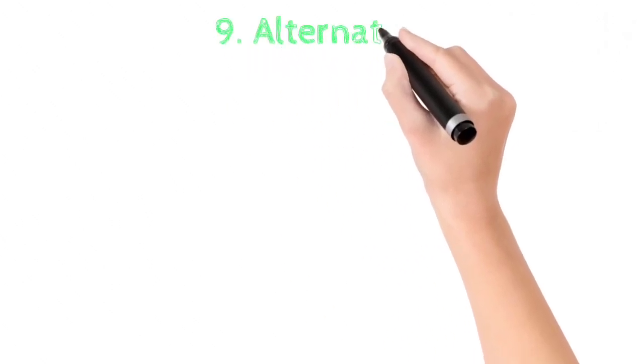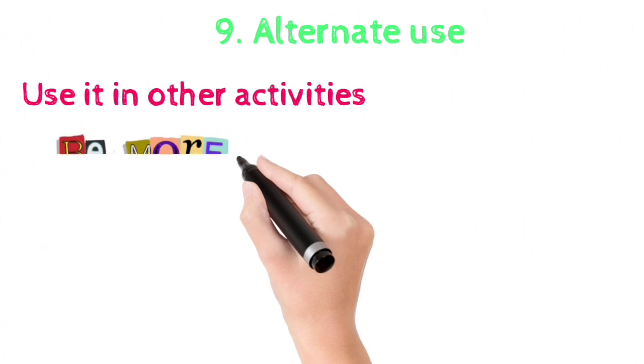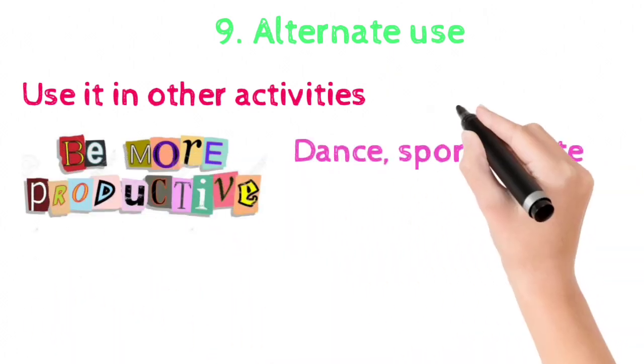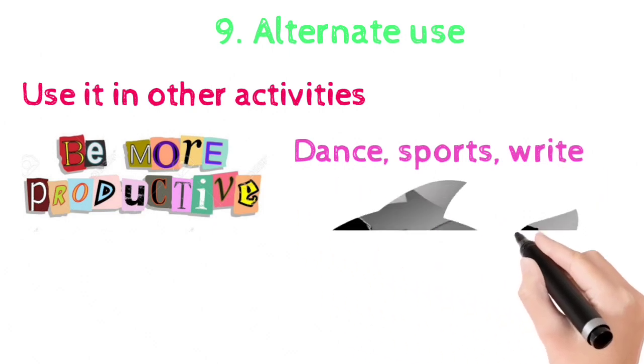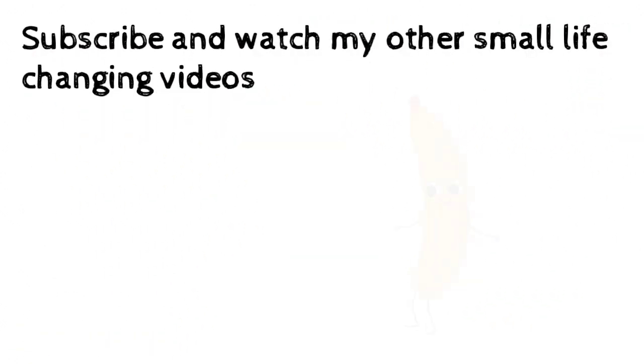Ninth is alternate use. If you can't control your aggression, use it in a productive way. Use it in activities like dance, sports, write if you can't share, go somewhere and scream, vomit what's going inside you. You can suggest more ways if you know in the comment section. Thank you.